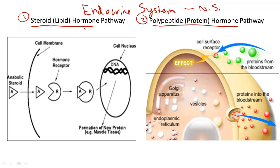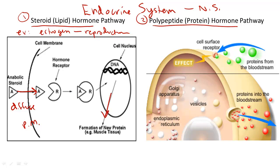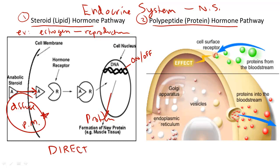Steroid hormones — for example, estrogen — help with certain functions in the body. Estrogen in particular helps with reproduction. The important thing to remember about steroid hormones is that they diffuse directly through plasma membranes to induce production of new proteins, or to turn certain genes on or off. Think of steroid hormones as being pretty direct, since they can directly diffuse through the plasma membranes.